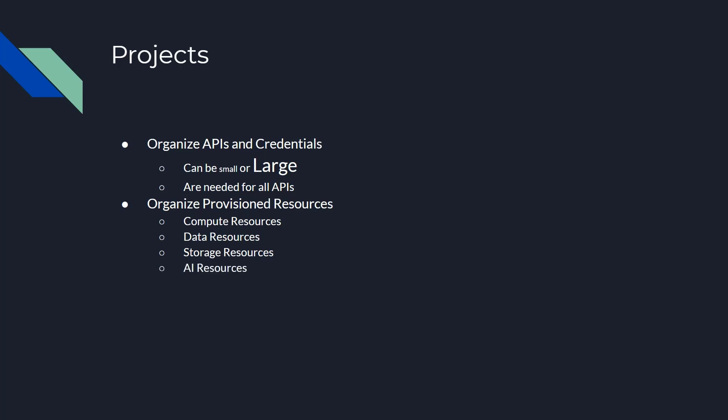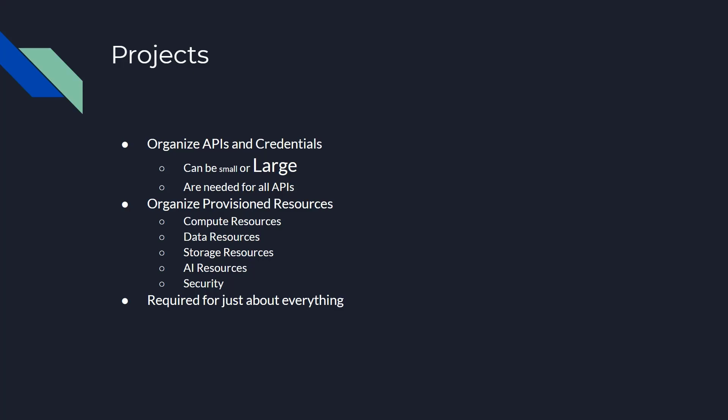Various AI resources such as those used to translate images into JSON packets or transcribe audio into text. And of course, no system would be complete without security to manage all of the various resources underneath it. Projects are required for just about everything. So let's go ahead and create our first project and take a quick look around at some of the various areas we can work with.